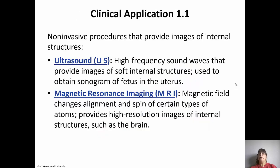Clinically, we have non-invasive procedures that can provide images of these structures. Ultrasound uses high-frequency waves to provide images of soft internal structures. It's often used to look at a fetus in the uterus, but also diagnoses issues in the abdominal and thoracic areas. MRI, or magnetic resonance imaging, uses a magnetic field that spins atoms to provide a high-resolution image of internal structures - useful for brain activity or spinal injuries like a ruptured disc. Both are non-invasive procedures that do not hurt.